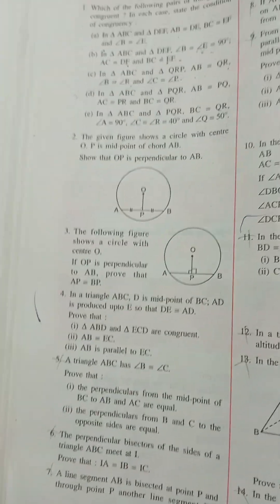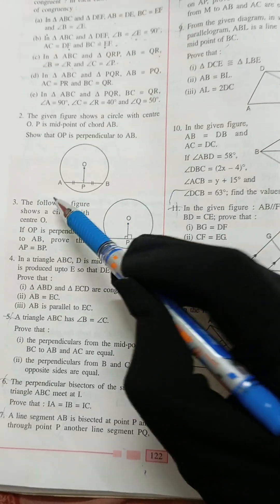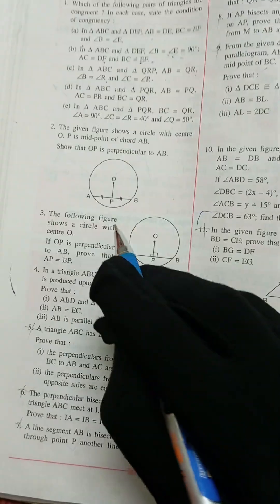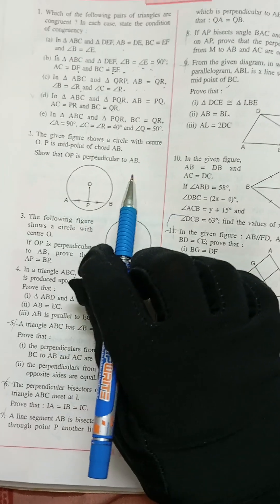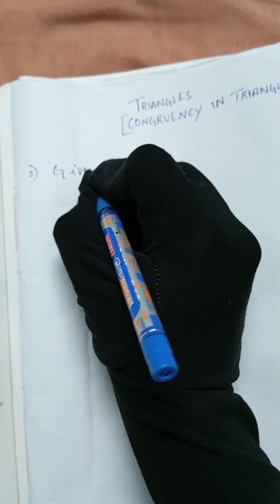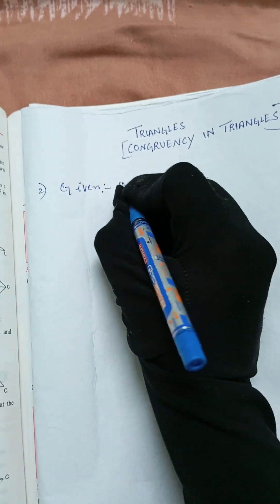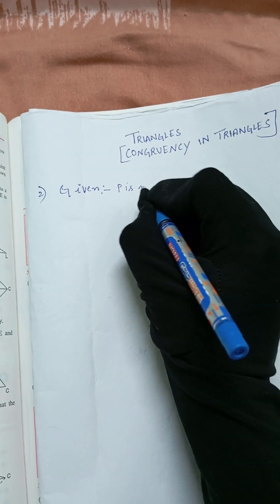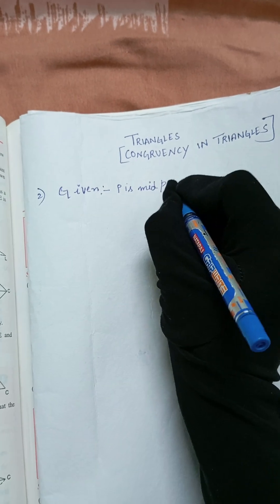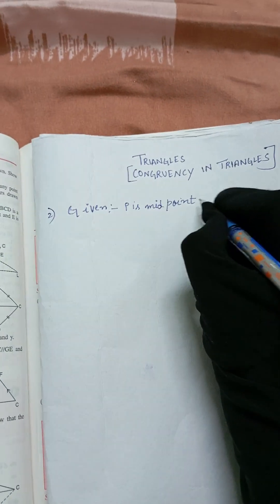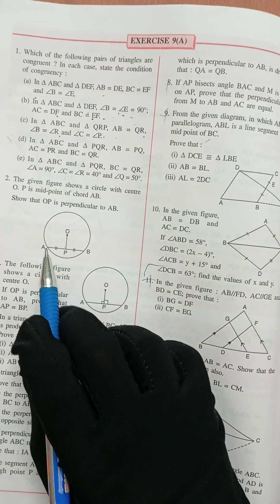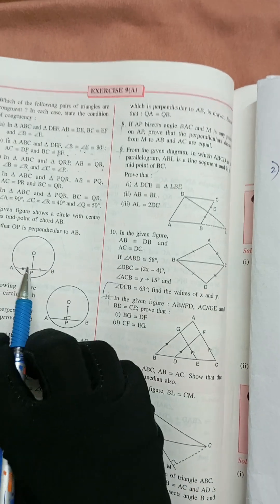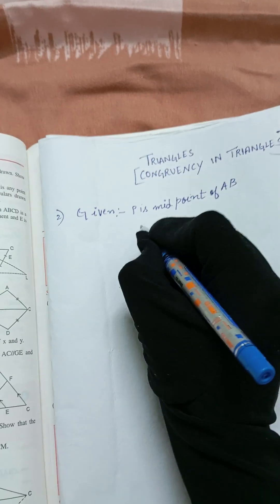So we have to prove that OP is perpendicular to AB. First we will write what is given: P is the midpoint of AB, and O is the center of the circle.